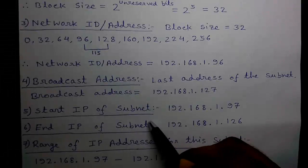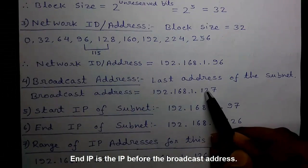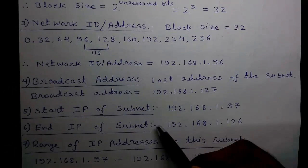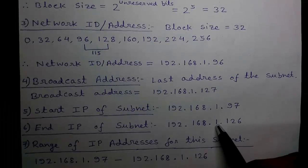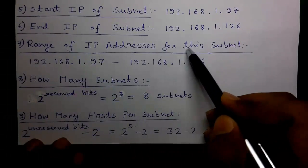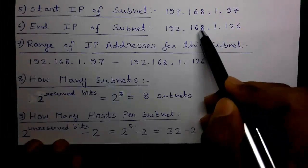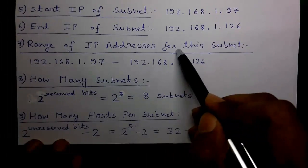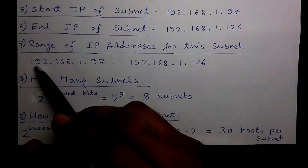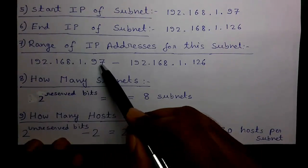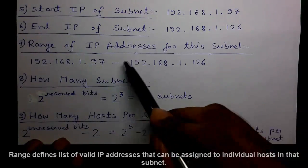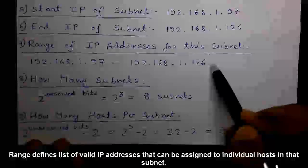Sixth calculation: end IP of the subnet. The end IP is the IP just before the broadcast address. The broadcast address is 127, so the end IP is 192.168.1.126. Seventh calculation: range of IP addresses. The range is from the start IP to the end IP — 192.168.1.97 up to 192.168.1.126. These are the valid IP addresses you can assign to hosts or devices in that subnet.